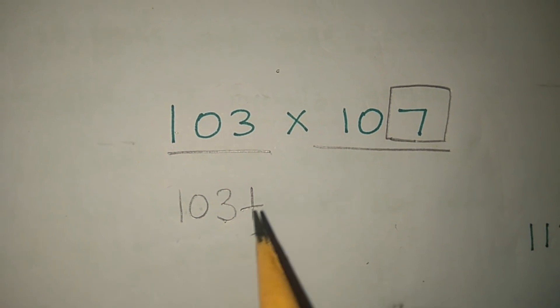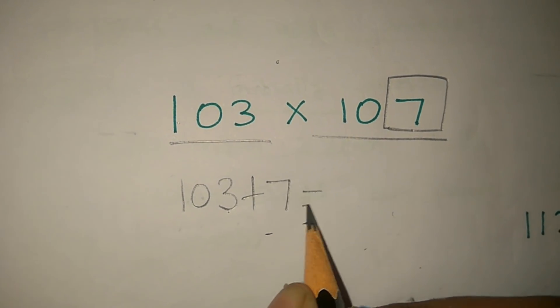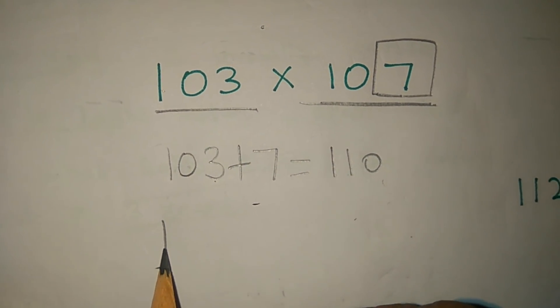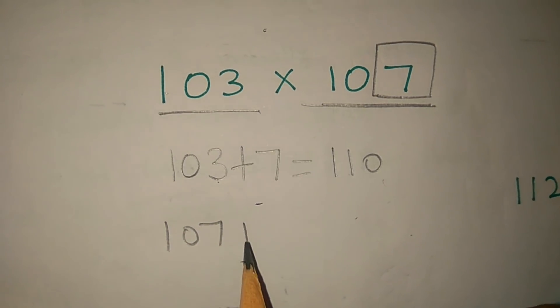103 is a number. So if you add 7, 110. In this deal, let's make 107, 107 plus here.